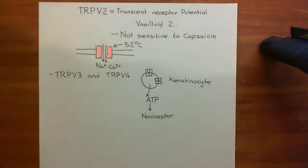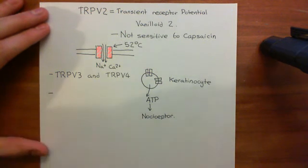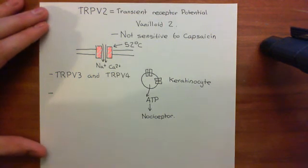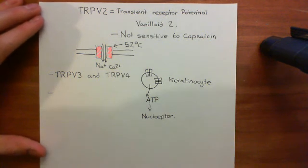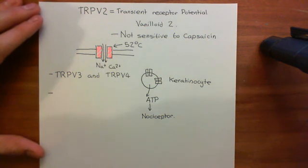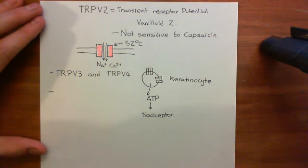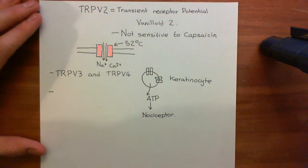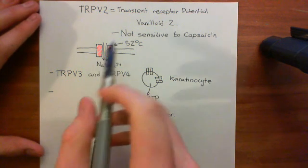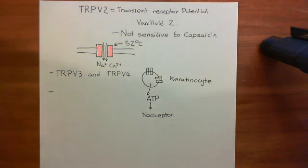The final example of a nociceptor sensor for noxious heat is a potassium channel. Potassium channels are a bit more difficult to understand in terms of how they trigger a receptor potential — it's essentially everything in reverse. We'll need to discuss membrane potential and how resting membrane potential is built up, and then we'll see how heat closing this constitutively open potassium channel leads to depolarization, just as if you had opened a normally closed sodium or calcium channel such as TRPV1 through TRPV4. We'll cover that in the next video.